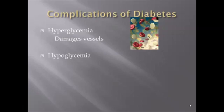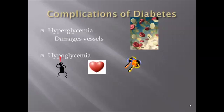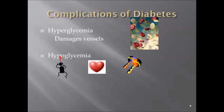Another complication is hypoglycemia, which is the opposite of hyperglycemia — there is not enough sugar in the blood. This is typically caused by too much insulin being injected into the bloodstream, which causes blood sugar to go into the cells. Symptoms include mental status changes like confusion and coma, increased heart rate, tremors, and shakes.